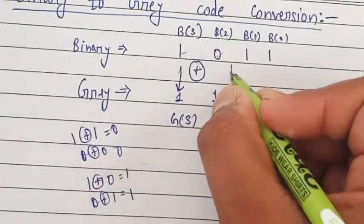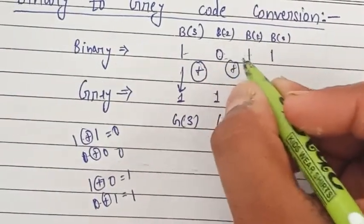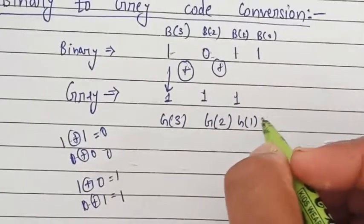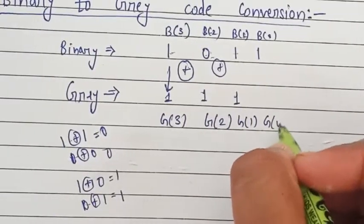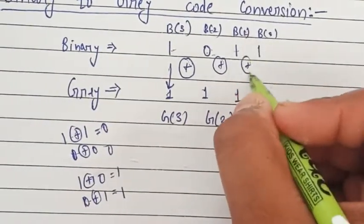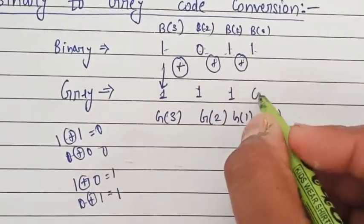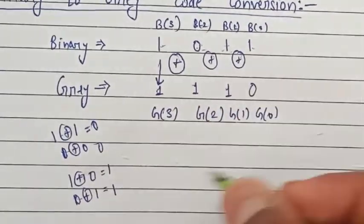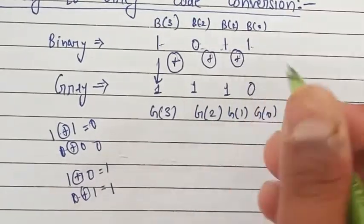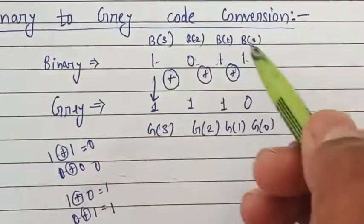For g1 you have to do XOR of b2 and b1 — in this case the answer is again 1. For g0 you have to XOR b1 and b0: 1 and 1 are the same, so the answer is 0. The final result is 1110. This is how we convert binary to gray code.